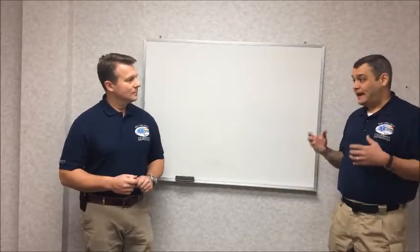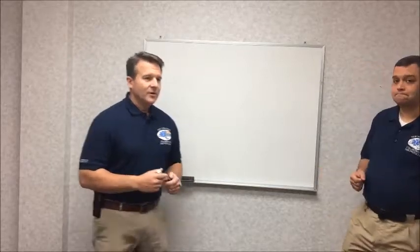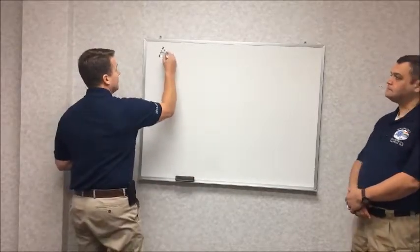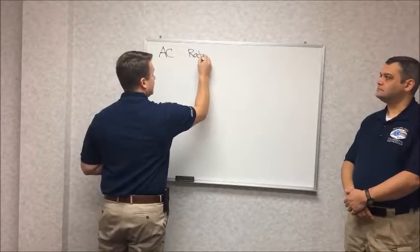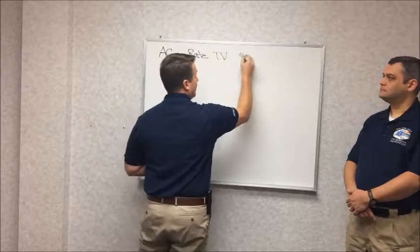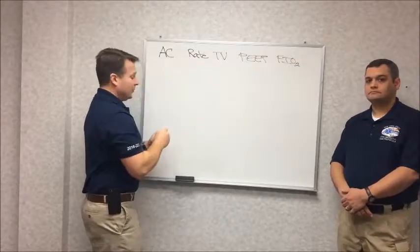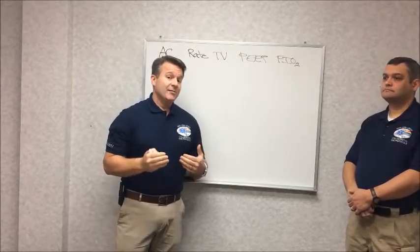So Dave, could you tell us a little bit about the difference between assist control and the SIMV modes that we would typically be using in the field? Assist control is there so that we can clearly define what type of ventilation the patient is going to get. We, the user, program the ventilator so that the patient gets the same breath every single time the ventilator is triggered, whether the patient triggers it or whether the ventilator triggers it itself. The things that we set in assist control that are important to remember are a rate and a tidal volume, a PEEP and an FiO2. By setting these parameters, we can guarantee a given minute ventilation.